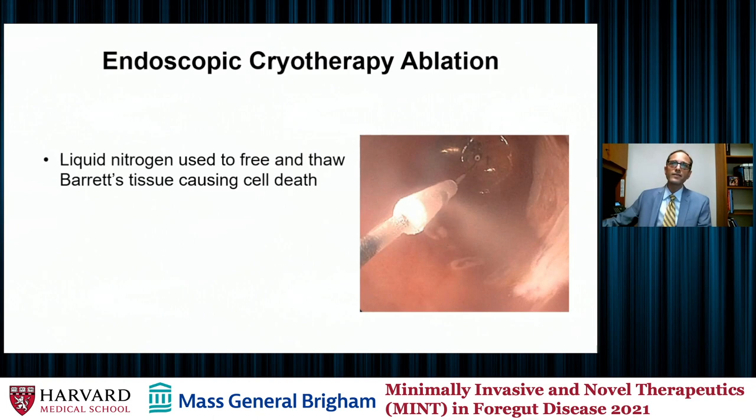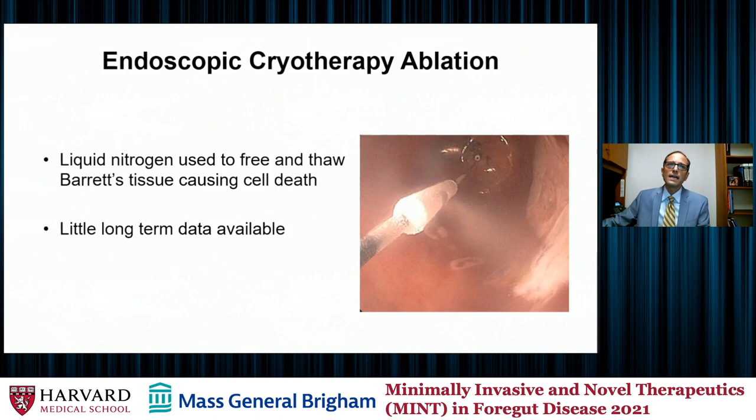Other tools we have for patients include endoscopic cryotherapy ablation. Liquid nitrogen or other agents can be used to freeze the esophageal wall in an area of Barrett's, which causes intracellular crystal formation. The tissue is then thawed and you can refreeze the Barrett's tissue, ultimately causing cellular death. In general, this is a good tool, though the data isn't as prolific as we see with radiofrequency ablation, and it's not the preferred modality for flat Barrett's epithelium.